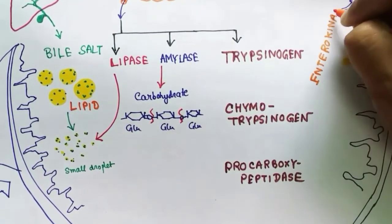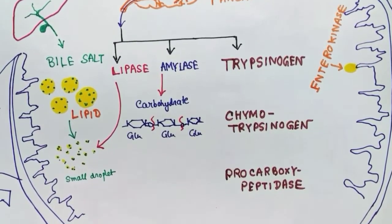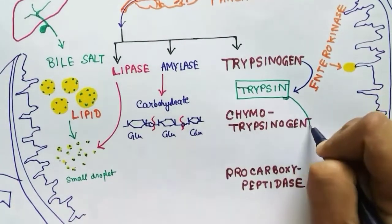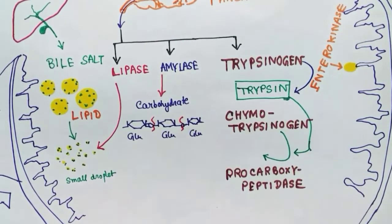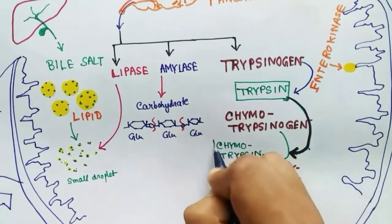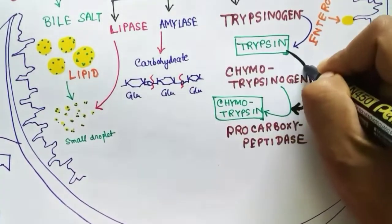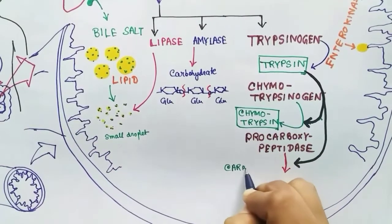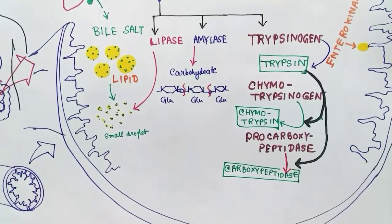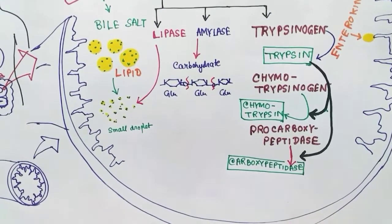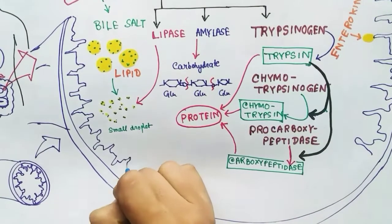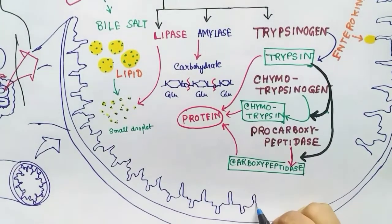Trypsinogen is activated by a brush border enzyme called enterokinase, which is present on the villi of the small intestine. Enterokinase activates trypsinogen into trypsin. Then trypsin activates chymotrypsinogen into the active enzyme chymotrypsin, and trypsin also acts on procarboxypeptidase to produce the active form carboxypeptidase. All of these — trypsin, chymotrypsin, and carboxypeptidase — act on protein and break it down into amino acids, so they are responsible for protein digestion.